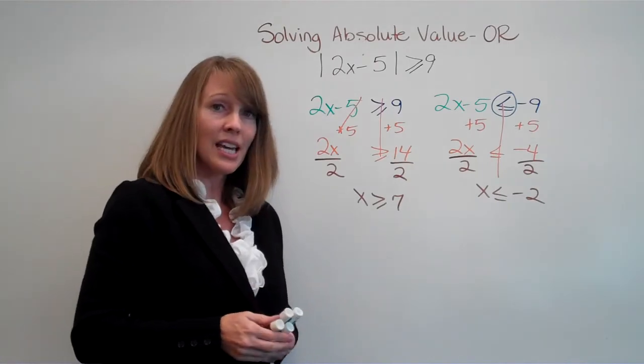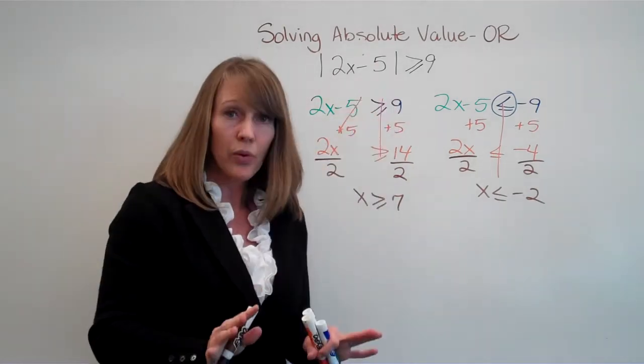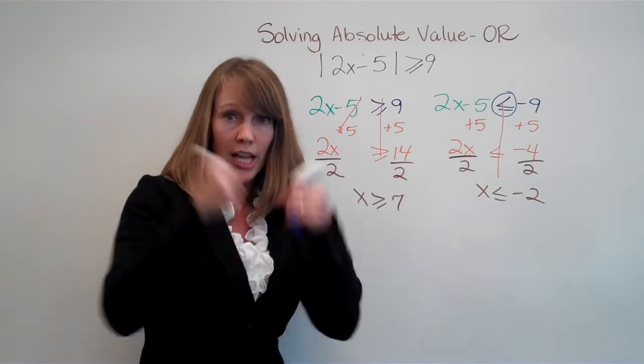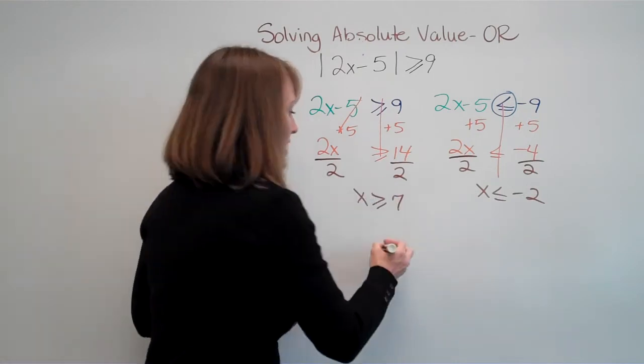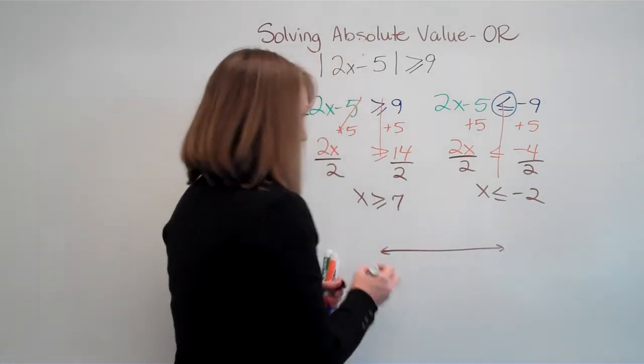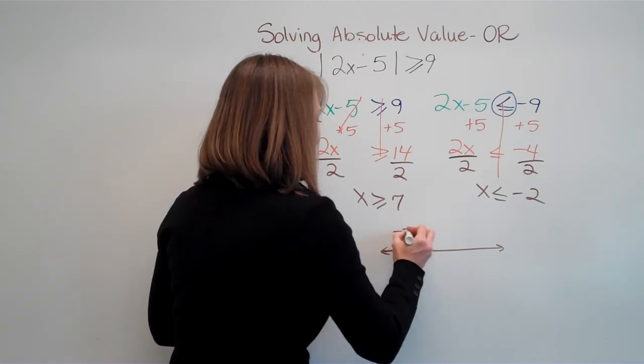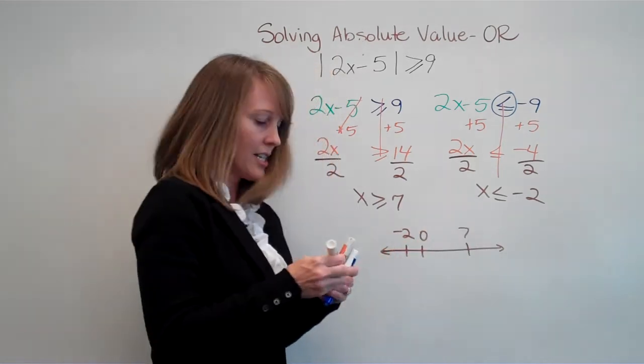Now remember, at this point in time, this is an OR. So if we've done this right and we graph it, it should look like this. So let's take a look and see. All right, here's my 0, negative 2 and positive 7, not to scale.